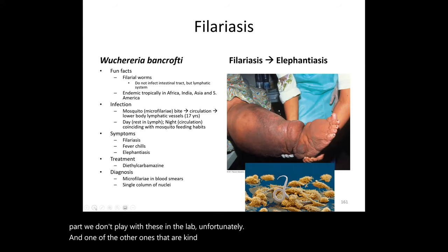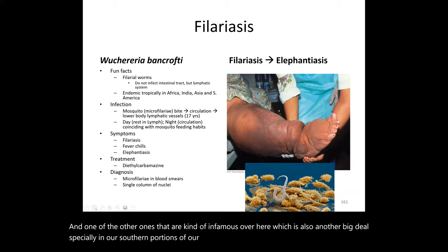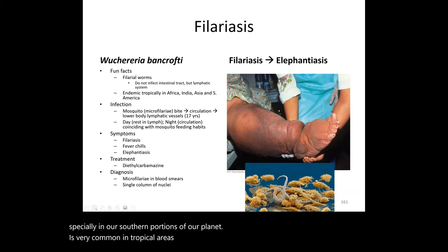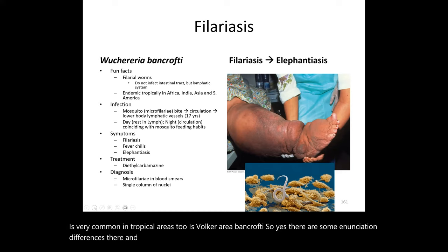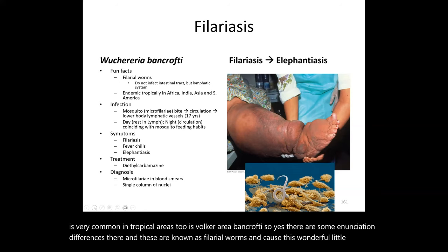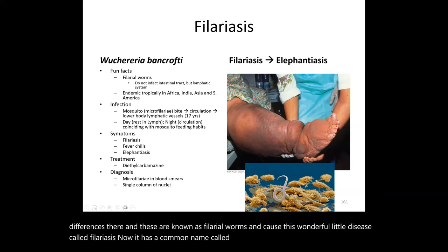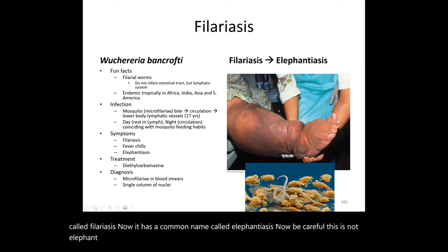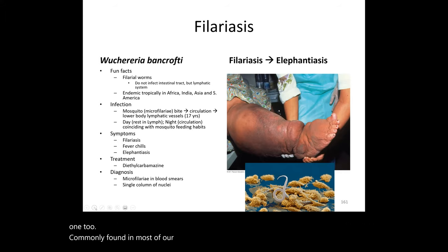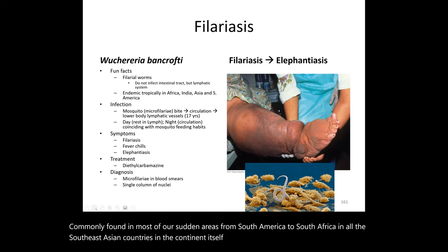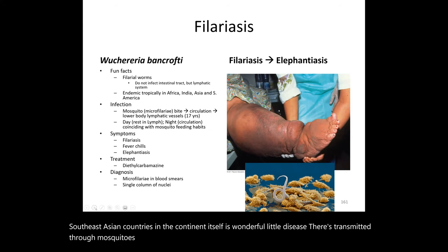Another well-known organism, especially in southern tropical areas, is Wuchereria bancrofti. These are known as filarial worms and cause the disease filariasis, commonly called elephantiasis — not to be confused with elephantitis, which is a different condition. It's commonly found in South America, South Africa, and throughout Southeast Asian countries, and is transmitted through tropical mosquitoes.